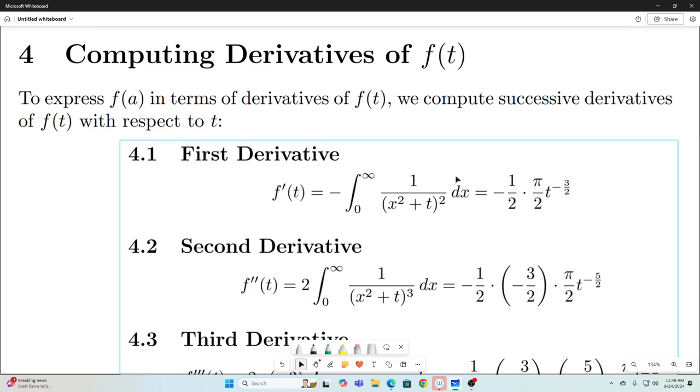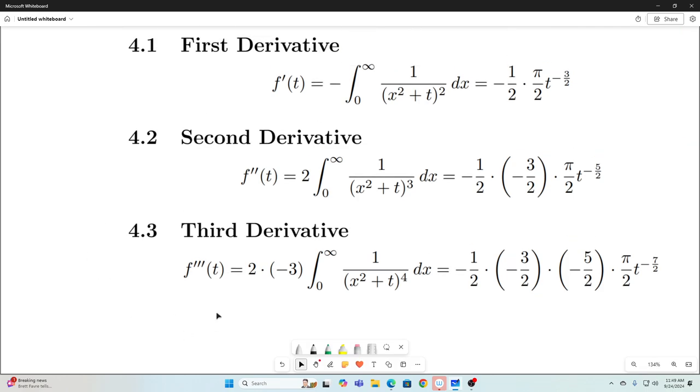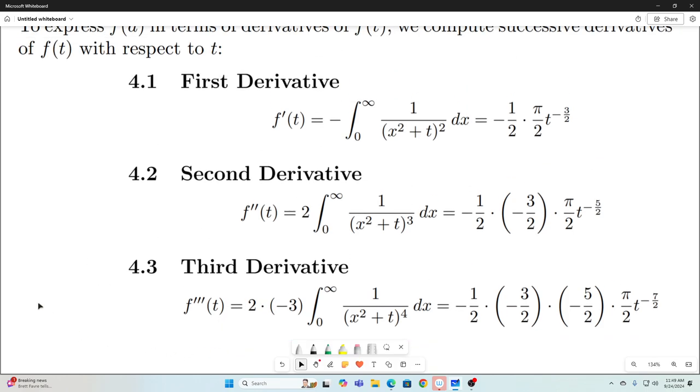So f prime of t is equal to this. This is what you get if you use the Leibniz rule for differentiation under the integral sign on our original f of t. And you also get this. This is the explicit form of f prime of t. Taking the second derivative gives you this. Taking the third derivative gives you this. Go ahead and pause the video and verify that for yourself if you'd like. But also before we go on to the next step, see if you can see the pattern here.